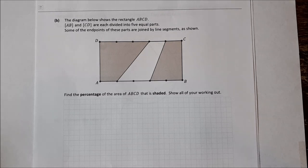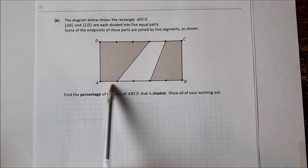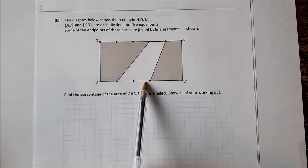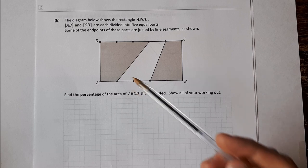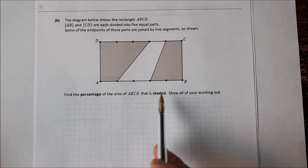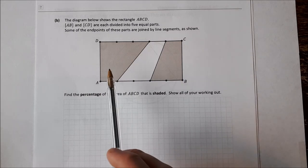So we'll start with this 2017 question. The diagram below shows the rectangle ABCD. AB and CD are divided into five equal parts. So you can see here this is equal to this is equal to this, and some of the endpoints of these parts are joined by line segments. So we have line segments going there. Find the percentage area of ABCD that is shaded. So that's find the percentage area of the rectangle that's shaded.